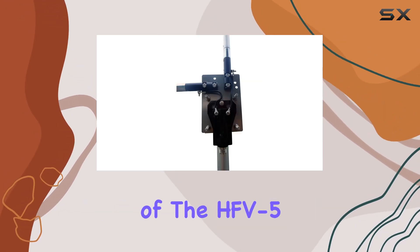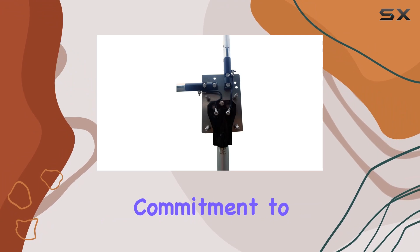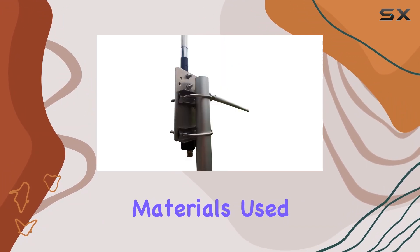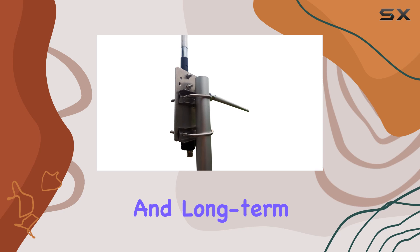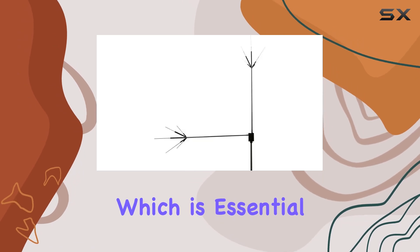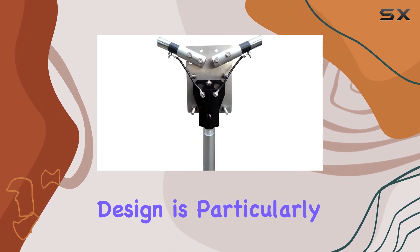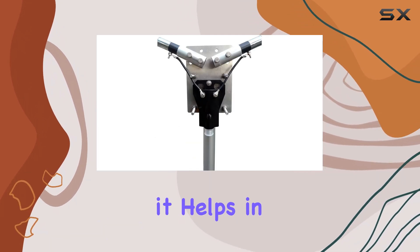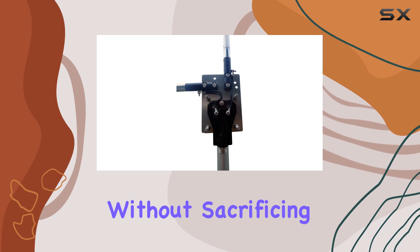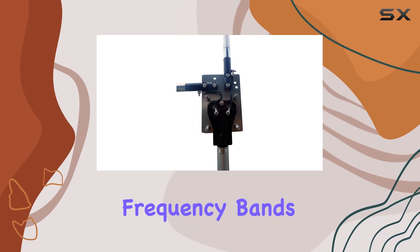The construction of the HFV5 reflects Diamond's commitment to quality. The materials used ensure durability and long-term reliability, which is essential for withstanding varied environmental conditions. The use of traps in the antenna design is particularly beneficial as it helps in reducing the overall length without sacrificing performance on the lower frequency bands.